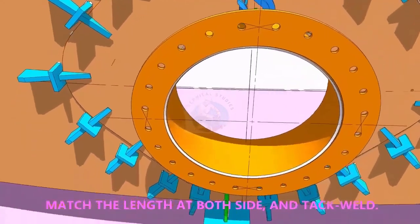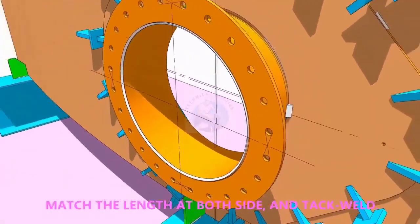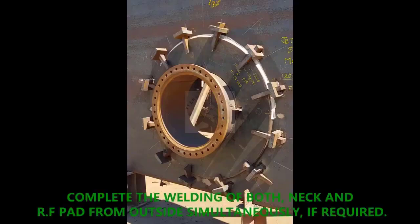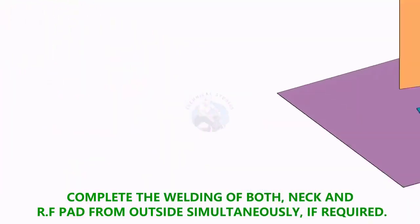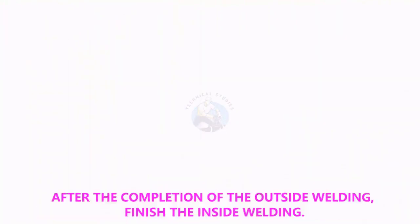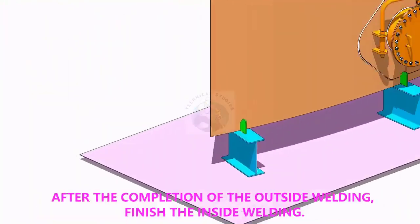You can weld both the pad and manhole joints simultaneously. After completing the welding from outside, back gauge the joint from inside and complete the welding.